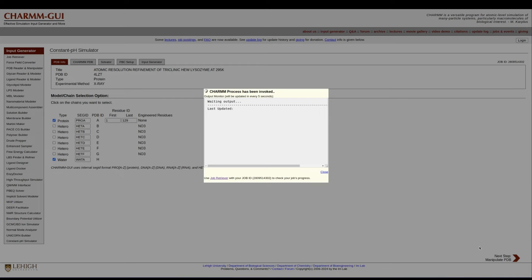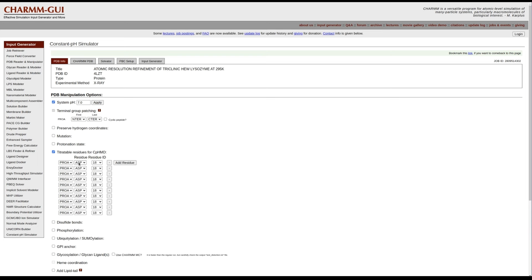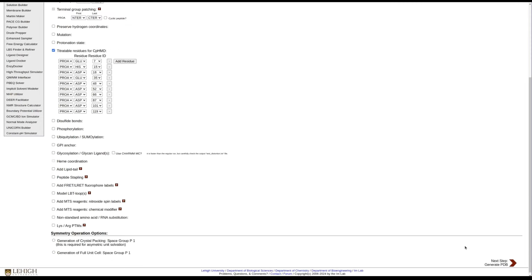If we want to modify the protein structure, this is where we would do it. To learn how to use the structure manipulation options, please see the video demos for PDB Reader and Manipulator. In addition, titratable residues for CPHMD must be specified here. You can add residues one by one based on SEGID and RESID. Setting a resname will filter resids for you. During system generation, they will be protonated to ease the setup, but the initial protonation state based on the system pH will be automatically set by CPHMD simulator. In this HEWL case, we will add 10 titratable residues.